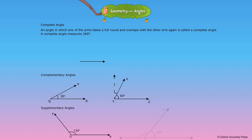Supplementary angles: If the sum of two angles is 180 degrees, they are called supplementary angles. For example, angle 130 degrees is a supplement of angle 50 degrees. Angles PQR and XYZ together measure 180 degrees.